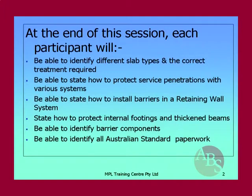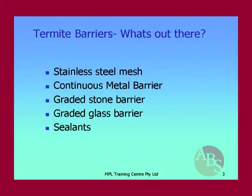At the end of this session you'll be able to identify the different slab types and the correct treatment required, state how to protect service penetrations with various systems, how to install barriers in a retaining wall system, how to protect internal footings and thickened beams, identify the barrier components, and identify all of the Australian Standard paperwork which has now been called up in the building code. To start, let's look at what barriers are out there, how they're meant to work in buildings, and what evidence you'll see on site.